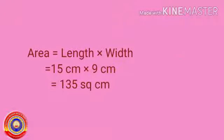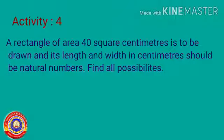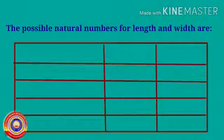Have you all understood this? Next, activity number four: a rectangle of area 40 square centimeters is to be drawn, and its length and width in centimeters should be natural numbers — find all possibilities. The area of a rectangle is equal to length into width. Here the area is given as 40 square centimeters. The possible natural numbers for length and width are shown in the table below.